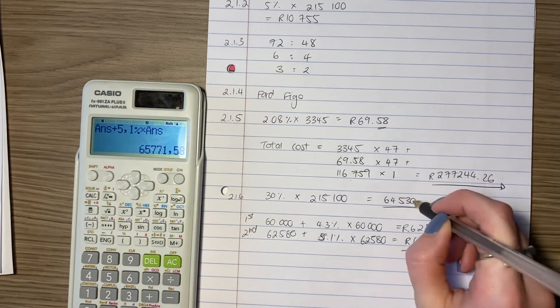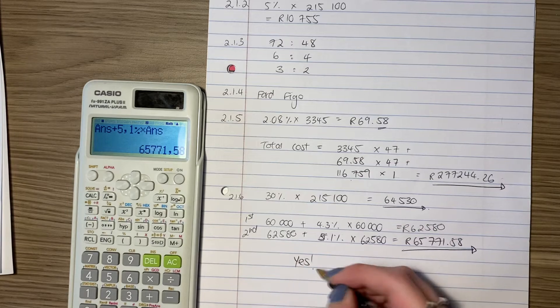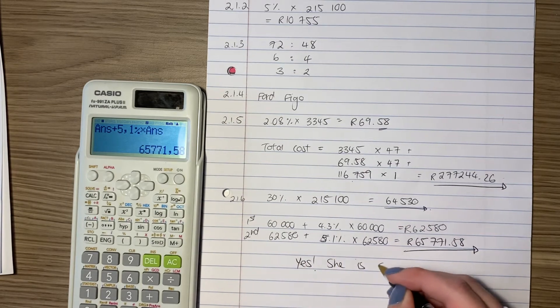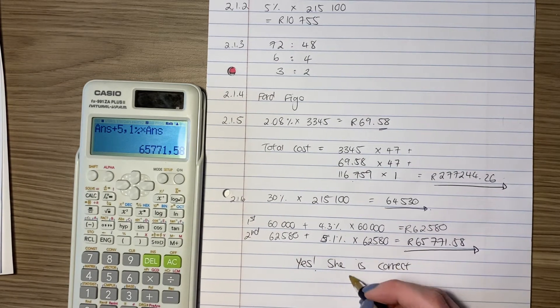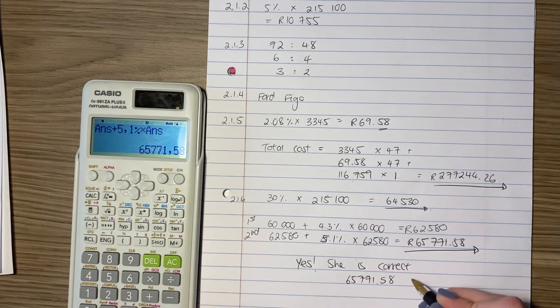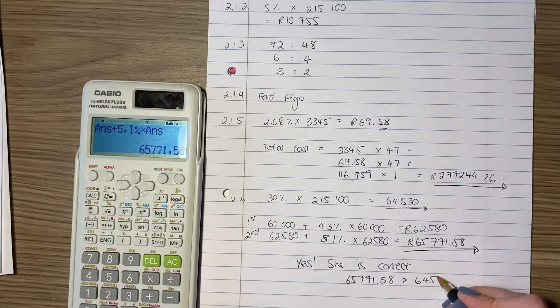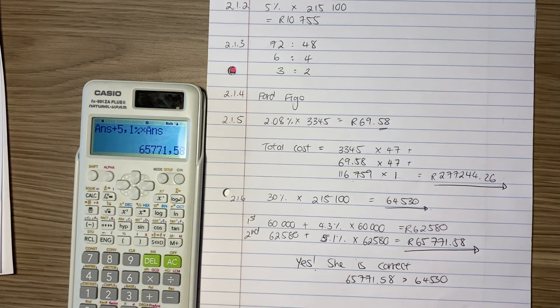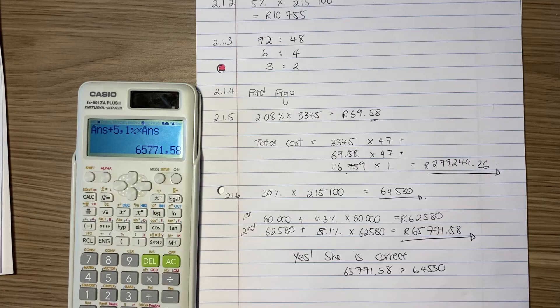So we're not done now. You have to compare this to this. And you say, yes, she is correct. Because the amount that she will have is greater than the amount that she will need. And that is us done. So I hope that was helpful. This is a really good question. Actually, a lot of marks, but also a good one to kind of make sure that you're on top of your finance. Let's move on to the next question.